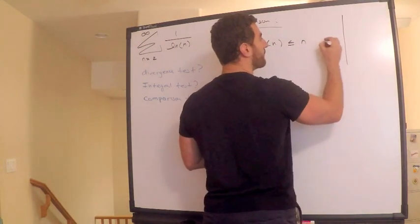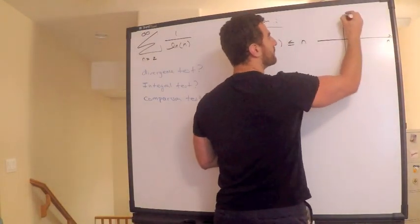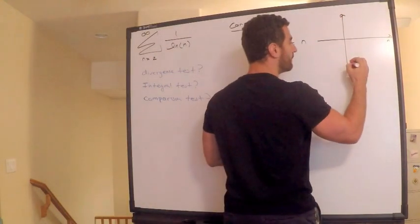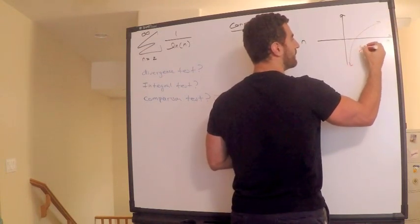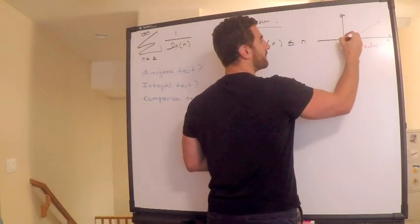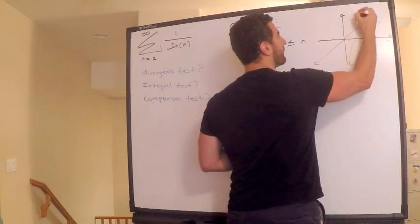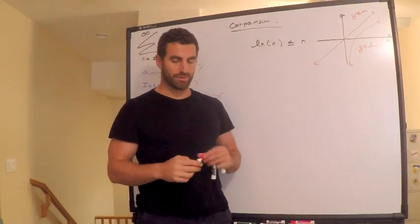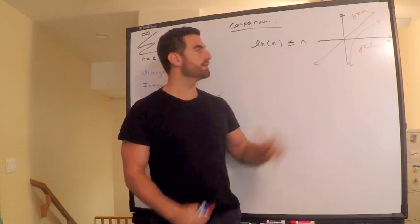If I have this sort of thing, I only care about n being greater than or equal to 2. Here is ln. You absolutely need to know what the graph of natural log looks like. So here is y equals ln of n. And then here is y equals n. So what I am saying here is that for n greater than or equal to 2, this is what we are concerned with here. Natural log of n is definitely less than or equal to n. Look at my picture.